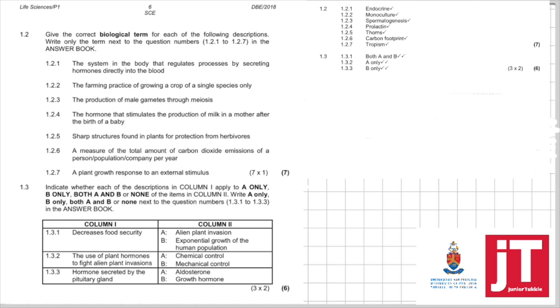We're going to work from the terminology because multiple choice is fairly straightforward, and I've chosen the terminology because although many people think it's easy, it's not that easy. And the spelling is very important when it comes to terminology. So let's look at the terminology. The question says, give the correct biological term for each of the following descriptions, write only the term next to the question numbers in the answer booklet.